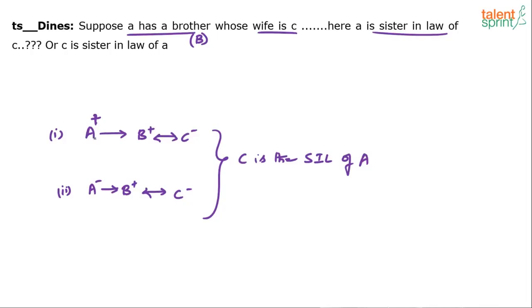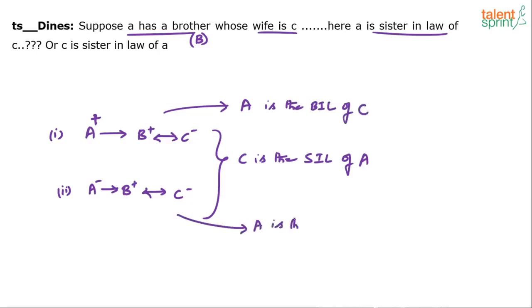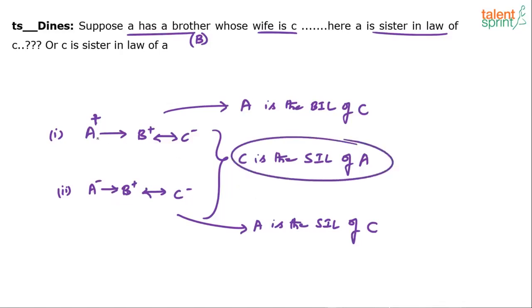Now, in Case 1 — where A is male — A becomes the brother-in-law of C. In Case 2 — where A is female — A becomes the sister-in-law of C. Why? Because C's husband is B, and B's sister is A, so A is the husband's sister. Your husband's sister is also your sister-in-law. So in Case 1, A is the brother-in-law of C, and in Case 2, A is the sister-in-law of C.